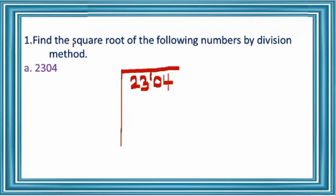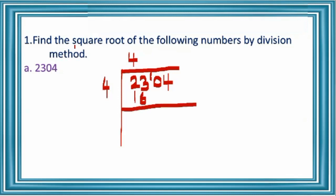23 is the first group of numbers. Then we have to find the perfect square number which is less than or equal to 23. That is: 4 fours are 16, 5 fives are 25. So 16 only we can take, that is 4 fours are 16. So 4 you have to write in the quotient place as well as the divisor place, and 16 you write just below 23. Then 23 minus 16 you have to find. 23 minus 16 is 7.